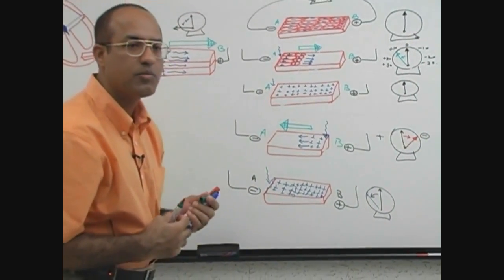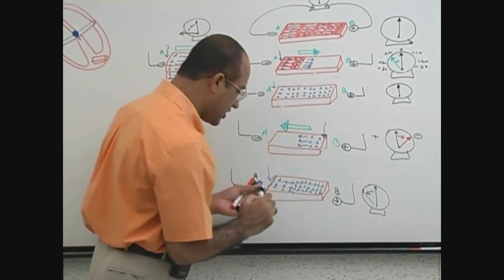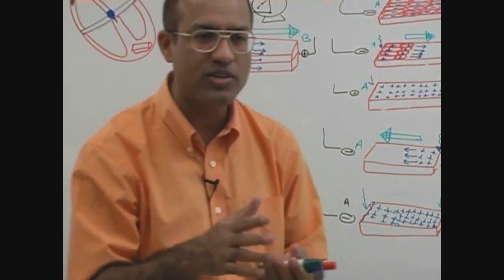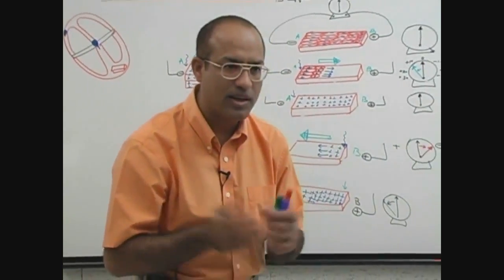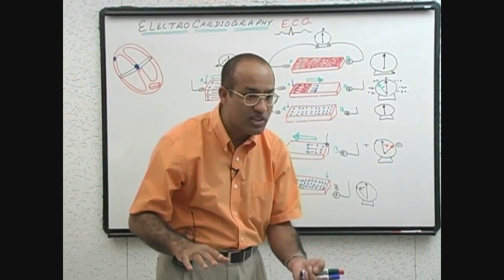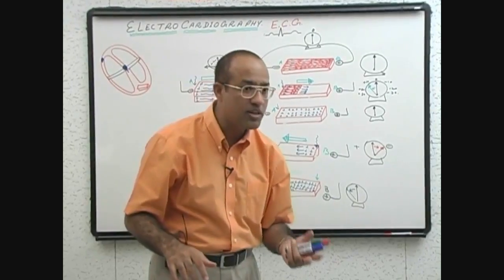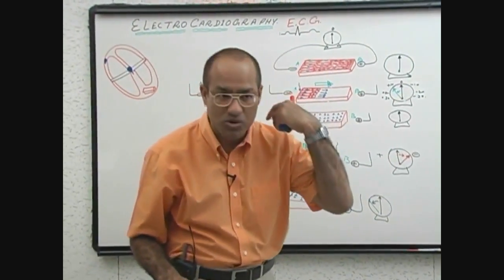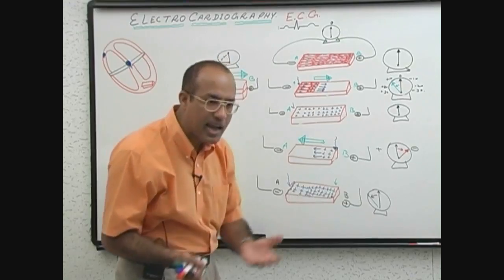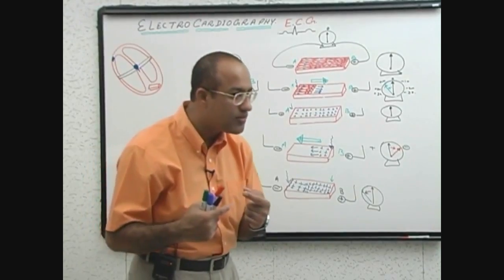Then after some time, the process of repolarization will start. Let's suppose repolarization starts from point B. During repolarization, positive charges are lost. During depolarization, the cell gains positive charges; during repolarization, the cell loses positive charges. During depolarization, sodium goes in; during repolarization, potassium goes out. Once cells have become electropositive, they start the process of repolarization, potassium is lost out of the cell, and cells become electronegative.